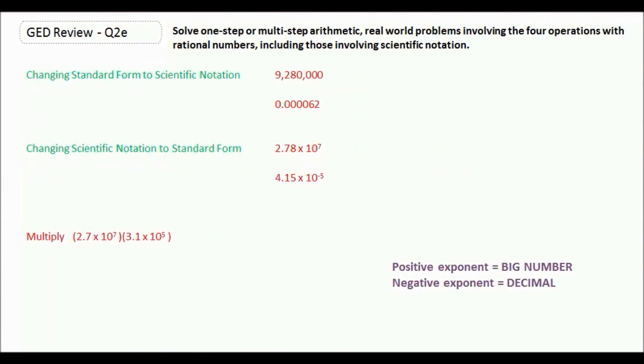Finally, let's work a little bit with scientific notation. Scientific notation is a way of writing really big numbers or really tiny decimals in a shorthand way, so we don't have to write out all the zeros inside the numbers.